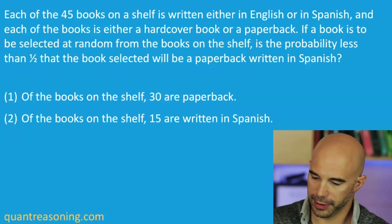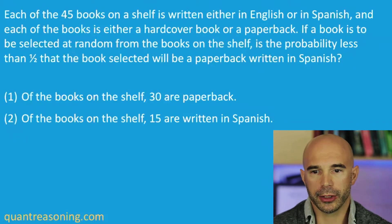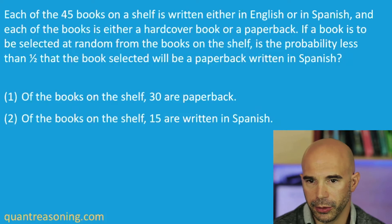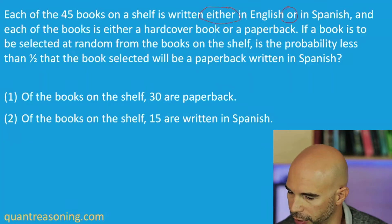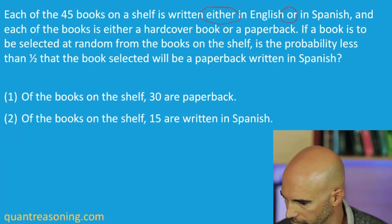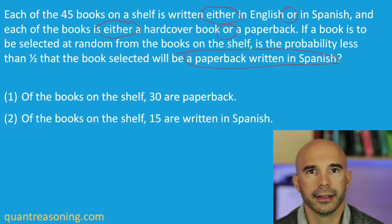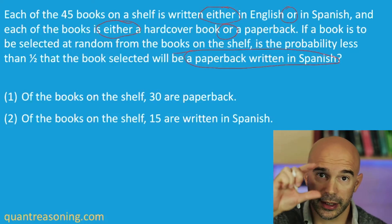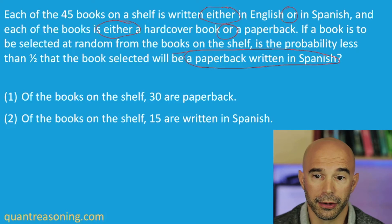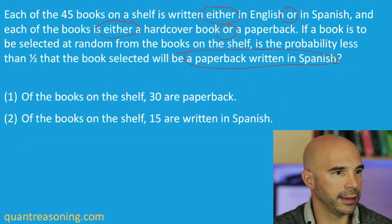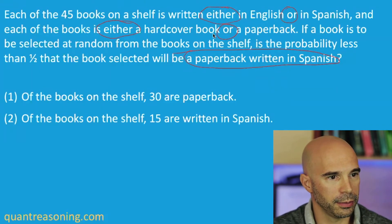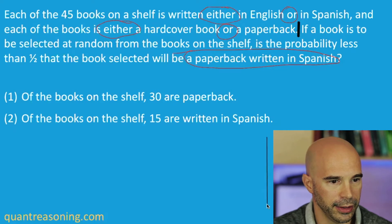Can we identify that this is an overlapping sets question? And if so, how? What are some words in the question stem that would help you identify that? These two and these two. Paperback written in Spanish — so that would be the top left cell in my Carroll diagram. Let's build that Carroll diagram. It's probably a good idea to build it before we get to the question mark. I'd probably stop reading here, and at that point I would build the Carroll diagram.